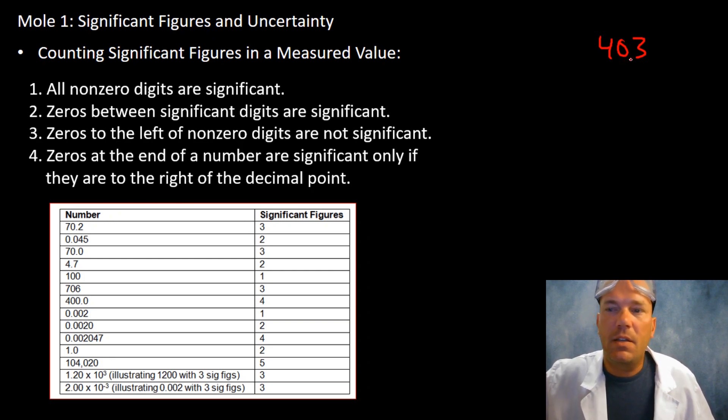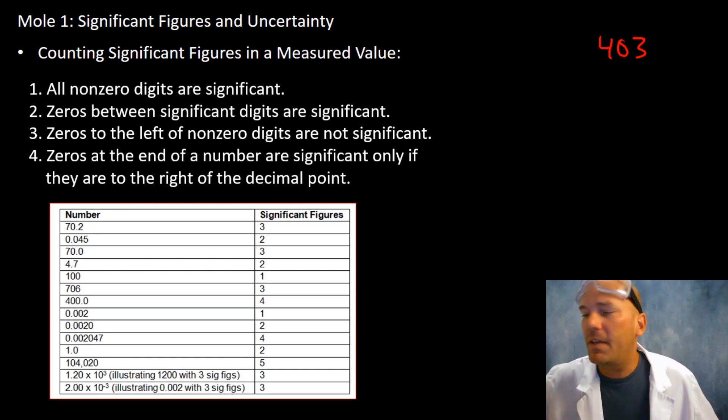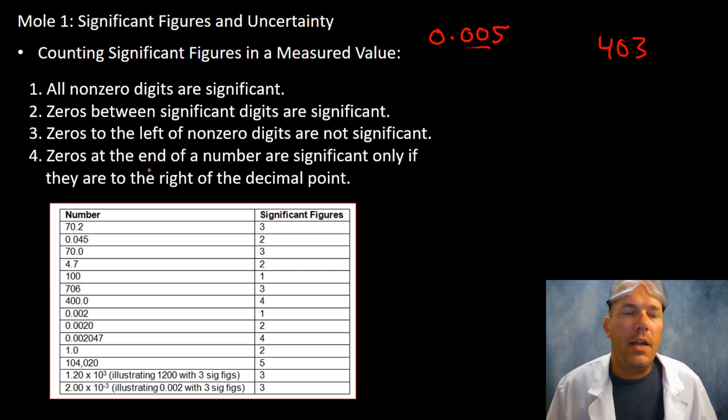Number three: zeros to the left of non-zero numbers are not significant. 0.005, these are placeholders, they are not significant. So in this case here we have one significant figure.